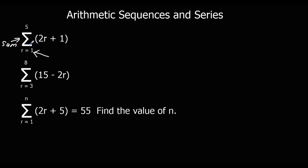We need to know what these numbers mean. So r equals one down here — this is the first number, so that's going to be the first thing we substitute in. We're going to substitute in one first, and we're going to end at five — that's the last number we substitute in. So we're going to sum this progression, substituting in one, two, three, four, and ending at five, adding them all together.